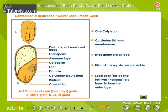Maize Grain. The maize grain has one cotyledon. The cotyledon is thin and membranous. Endosperm stores food. Hilum and micropyle are not visible. The seed coat, testa, and fruit wall pericarp are fused to form the outer layer.